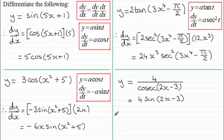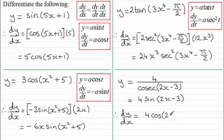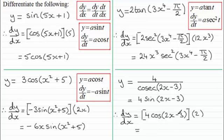So we should now be able to differentiate this. dy/dx equals: differentiating 4 sine t with respect to t gives us 4 cosine of t — 4 cosine of all of 2x minus 3. We then multiply by dt/dx: differentiating t, which was 2x minus 3, with respect to x gives 2. Putting this all together: 4 times 2 is 8, giving us 8 cosine of 2x minus 3.